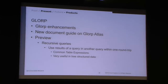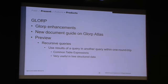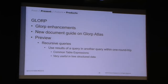Likewise, GLORP — I always like to joke that GLORP is a name when engineers name the product. GLORP is an acronym that stands for Generalized Lightweight Object Relational Persistence. We've enhanced that and have a new guide on the GLORP Atlas. In preview, we have what you might think of as recursive queries — they're also called common table expressions. If a lot of the data you deal with is hierarchical, you can get a lot of that data back in one query rather than multiple queries. So it could be a big performance improvement for your application if it falls into that category.